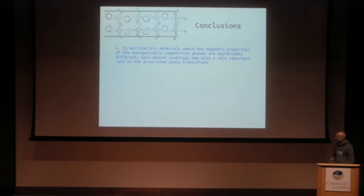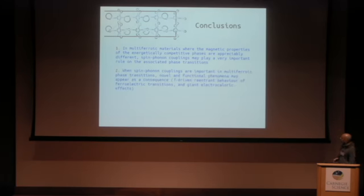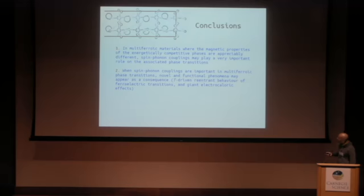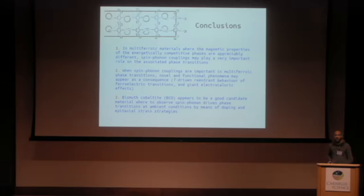In conclusion, we have shown that in multiferroic materials when competing phases present quite different structural and magnetic properties, spin-phonon couplings may be crucial to predict the phase transitions occurring in them. As a result of spin-phonon couplings, we find impressive functional phenomena such as temperature-driven reentrant behavior and giant electrocaloric effects. Bismuth cobaltate is a good candidate to realize these effects, either via solid solutions with iron or lanthanum, or by growing thin films.